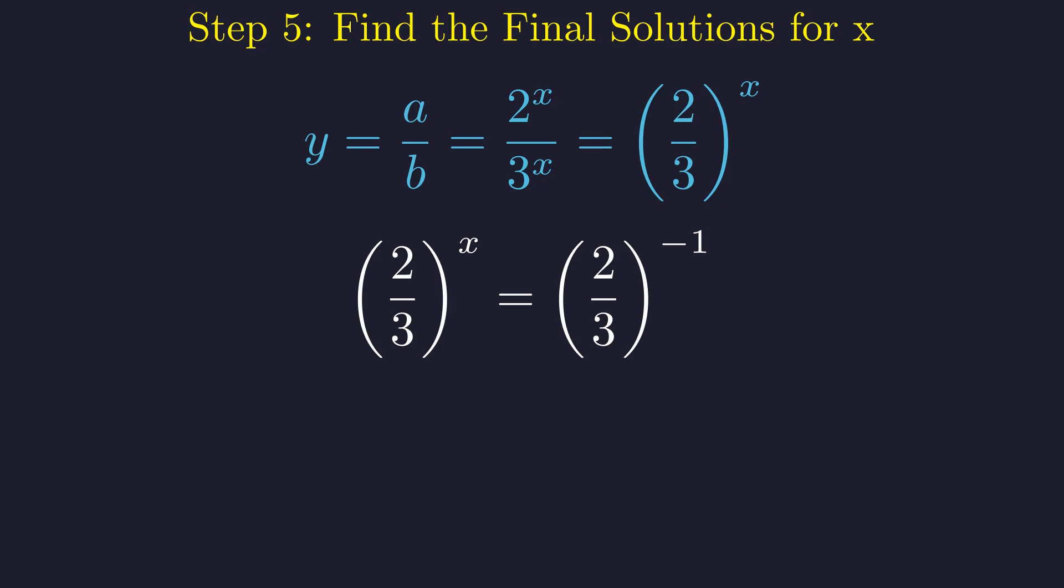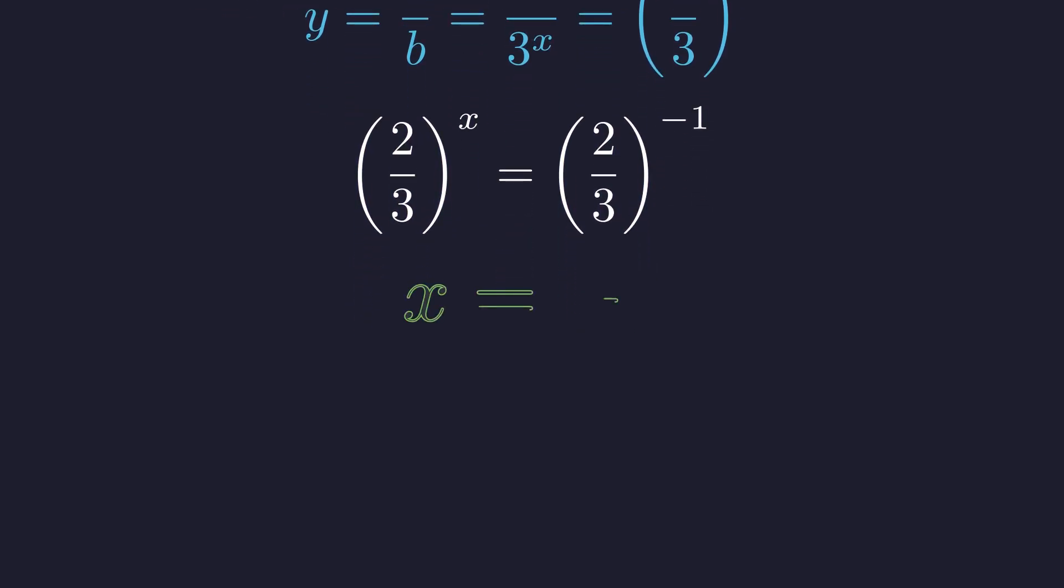If we wanted to be more formal, we could use logarithms. x times the natural log of (2/3) equals the natural log of (3/2), which gives us x = -1. Since the bases match, the exponents must match. Our first solution is x = -1.